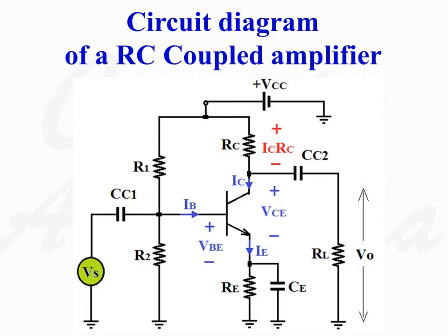This is the circuit diagram of a RC coupled amplifier. The circuit consists of a transistor. Resistors R1 and R2 form the voltage divider biasing circuit. Resistance RC is the DC load. Resistance RE is connected to provide stability against temperature variations. Coupling capacitor CC1 couples the input signal. Coupling capacitor CC2 couples the output of the amplifier to the load resistance RL. Emitter resistance bypass capacitor CE is connected to avoid any AC voltage drop across the emitter resistance RE.